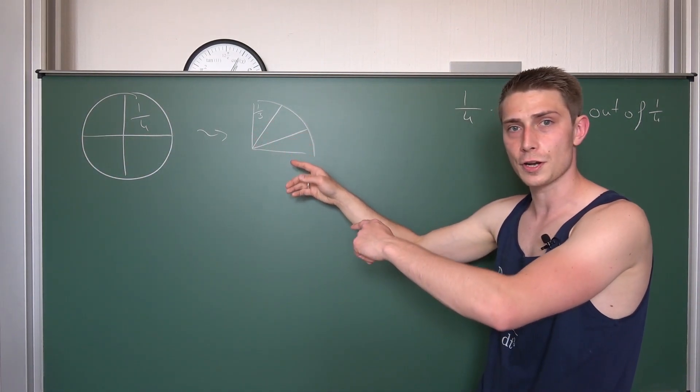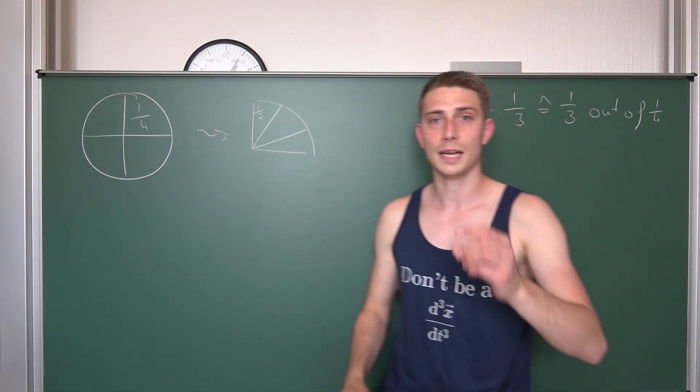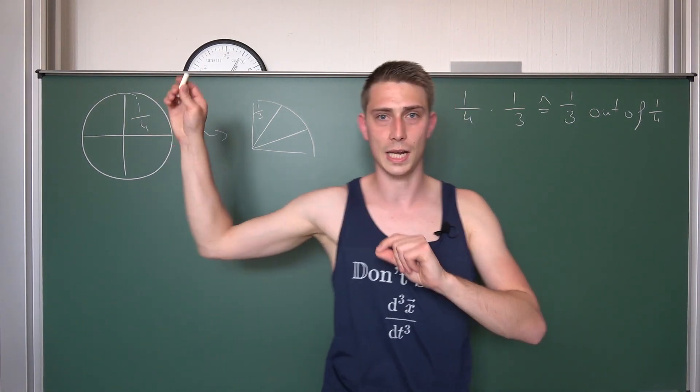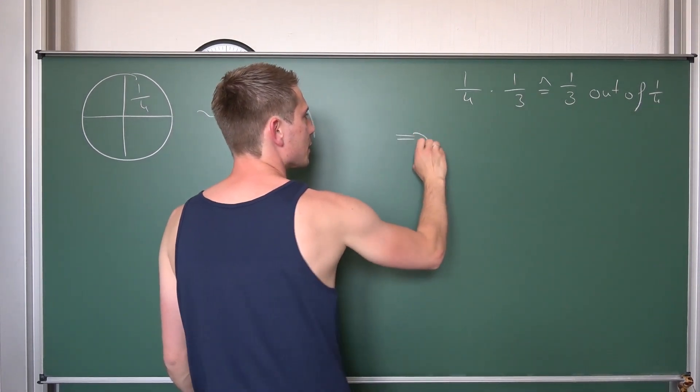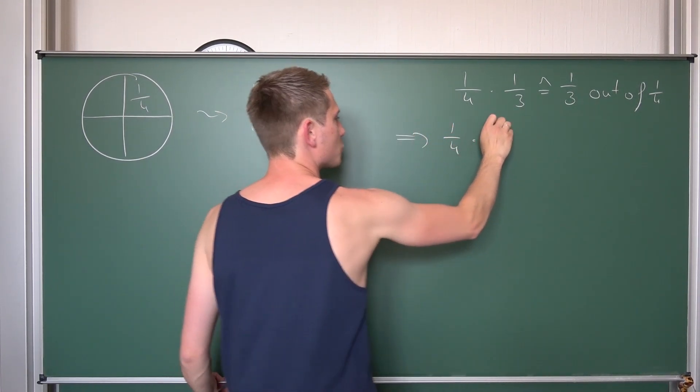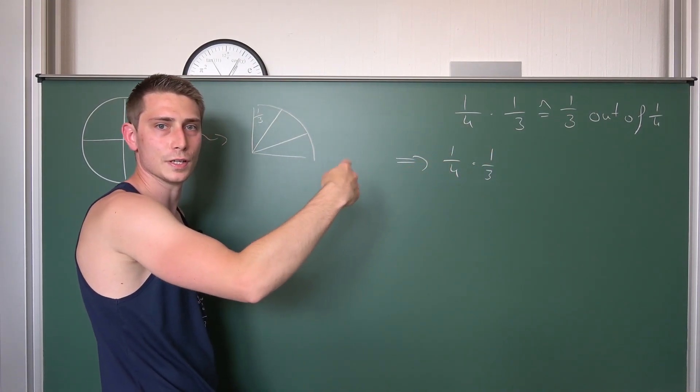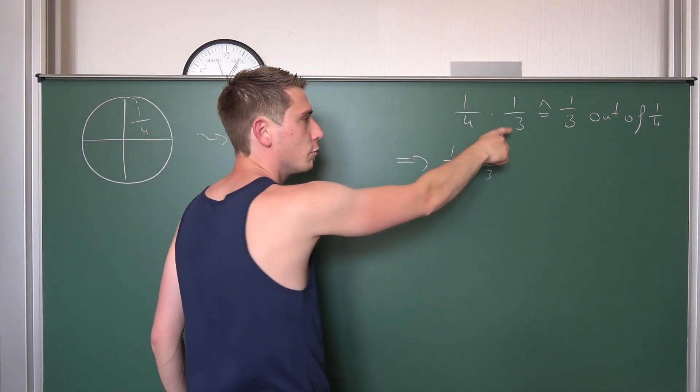Meaning, one third out of one quarter is one part out of twelve out of a whole cake. Meaning, you can translate one third times one quarter. And this is commutative, by the way. So, one third times one fourth is the same as one fourth times one third.